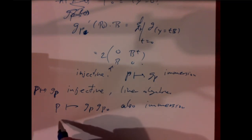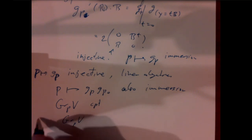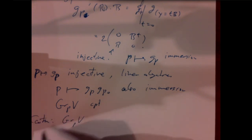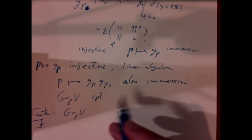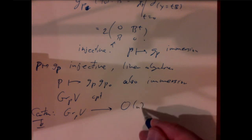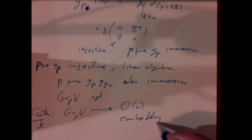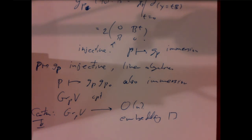The Grassmannian is compact — that's an exercise for you to prove — so we have a proper injective immersion. By our theorem, it's therefore an embedding. That embeds the Grassmannian into the orthogonal group. There are a few details left about the linear algebra calculations, but those are done in the notes.